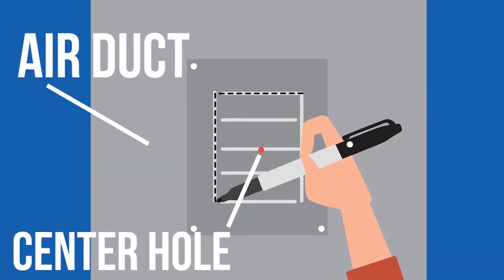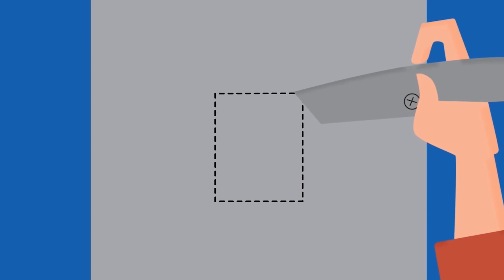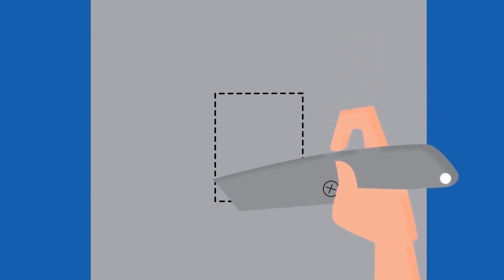Use the mounting plate as a guide to cut an opening in your air duct. Then use a utility knife or other tool to cut the opening.